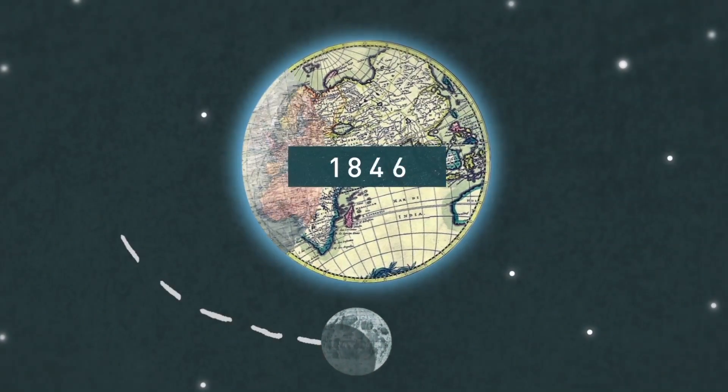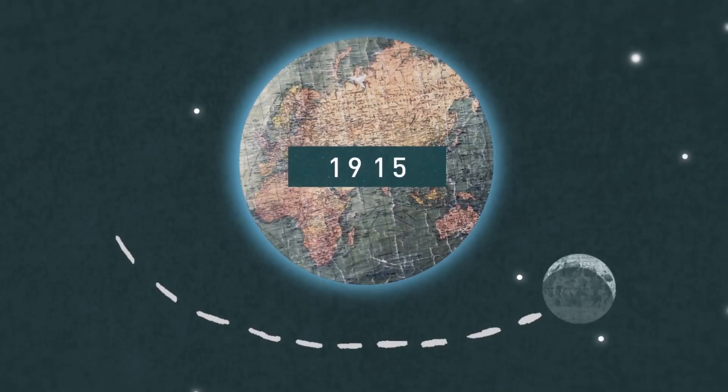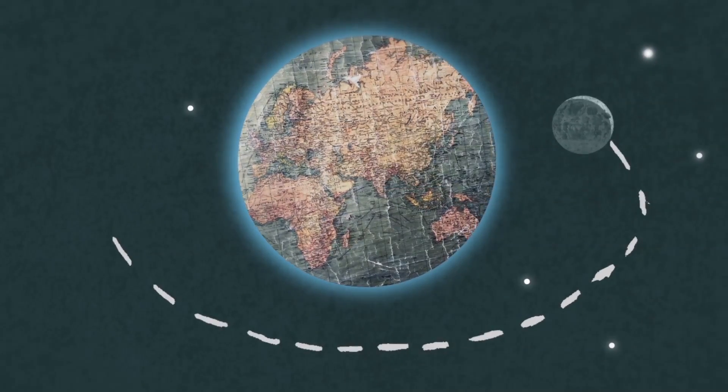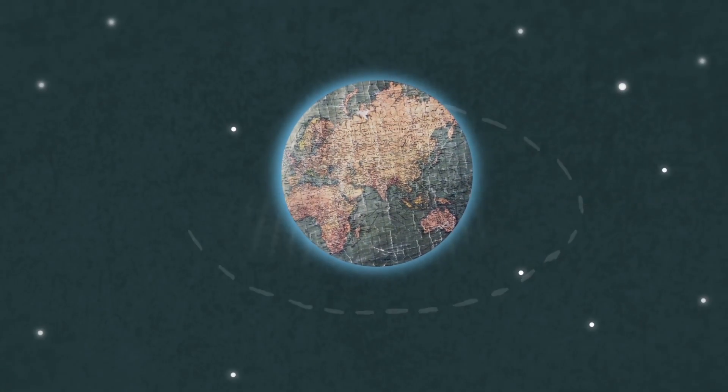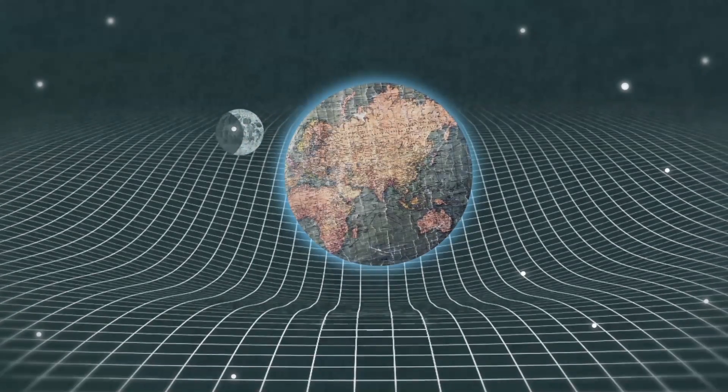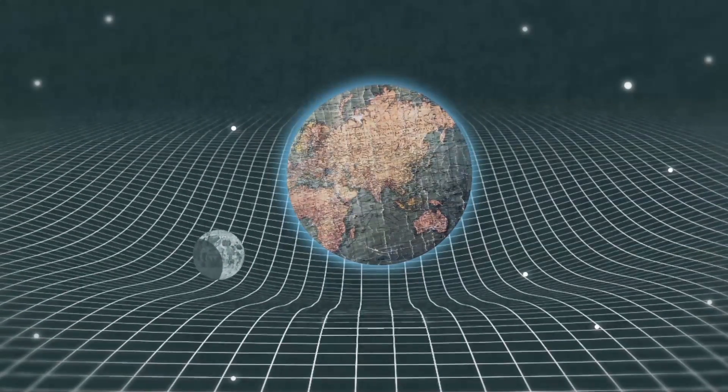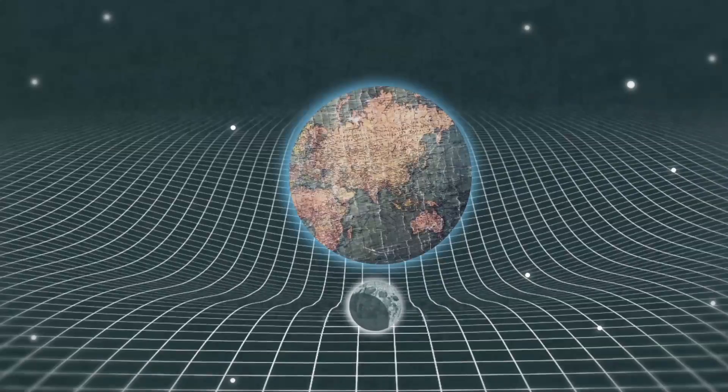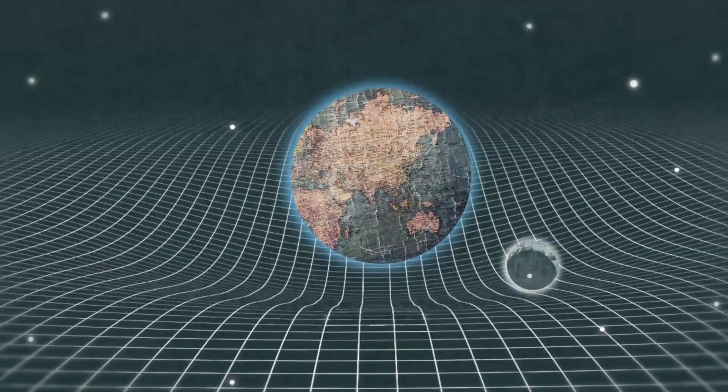Einstein's radical idea was that gravity wasn't a force at all. He proposed that massive bodies such as the Earth warp the fabric of space and time around them. So when smaller objects travel past them, they move in curves. We experience this as gravity.